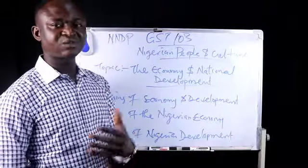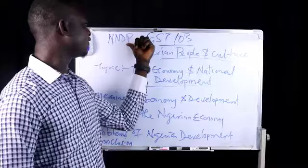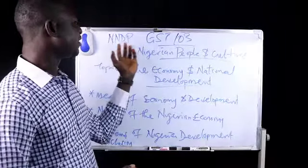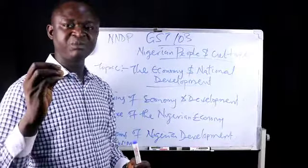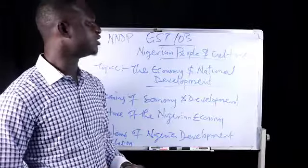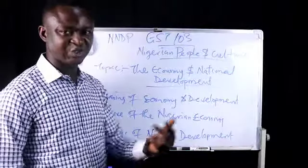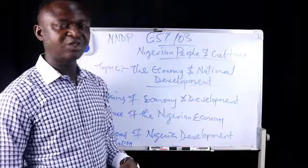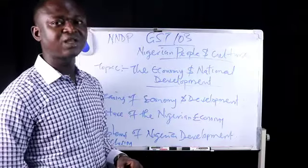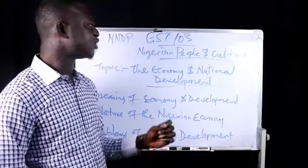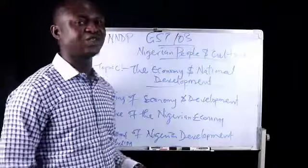The 1946 Richard constitution reduced the income definition of a voter from 100 pounds to 50 pounds, although still limiting it to only male adults resident in Nigeria. By extension, that constitution was able to give quasi-autonomy to the regional government. Not until the Lyttleton constitution of 1954 were regions given full autonomy, whereby the constitution recognized the existence of the northern region, the eastern region, and the western region.